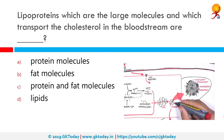Lipoproteins, which are the largest molecules that transport cholesterol in the bloodstream, are what? They are protein and fat molecules. Cholesterol travels through the blood on proteins called lipoproteins. Bad cholesterol — low-density lipoprotein — makes up most of our body's cholesterol. High levels of LDL cholesterol raise our risk of heart disease and stroke.